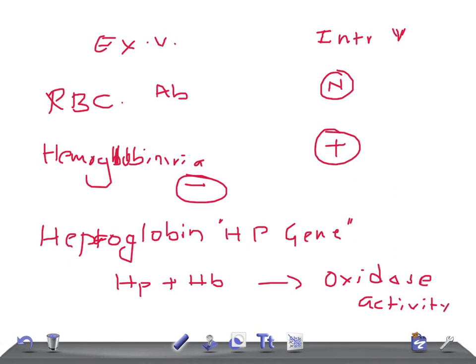The haptoglobin-hemoglobin complex that has formed through this binding is then removed by the reticuloendothelial system — mostly the spleen. So this complex is removed by the spleen. Now in intravascular hemolysis, free hemoglobin is released into the circulation, and haptoglobin binds to that free hemoglobin.